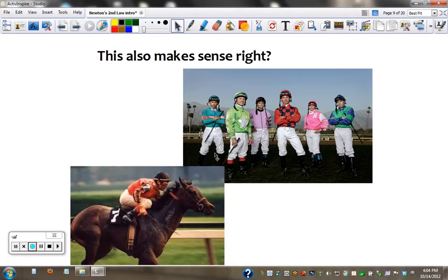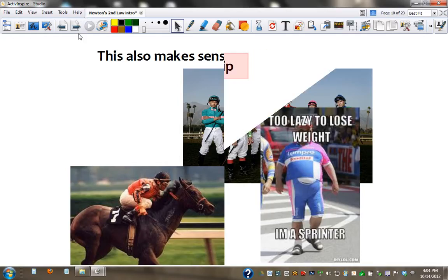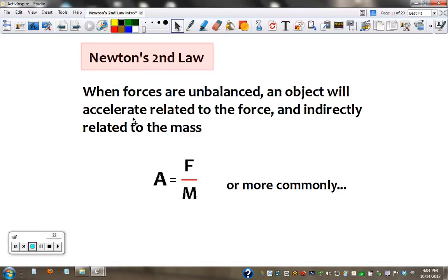This makes sense too. Jockeys are tiny. We wouldn't put this guy on top of the horse to race. Because it would be more mass for the horse to carry. So we've got those two vocab words covered. And this is Newton's second law. When forces are unbalanced. That's key. Underline that. An object will accelerate. Related to the force. And indirectly related to the mass. The formula looks like this. Or more commonly, force equals ma.